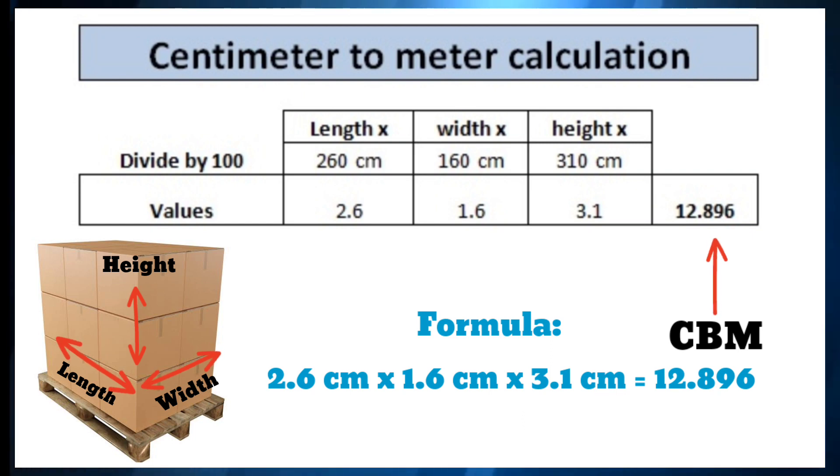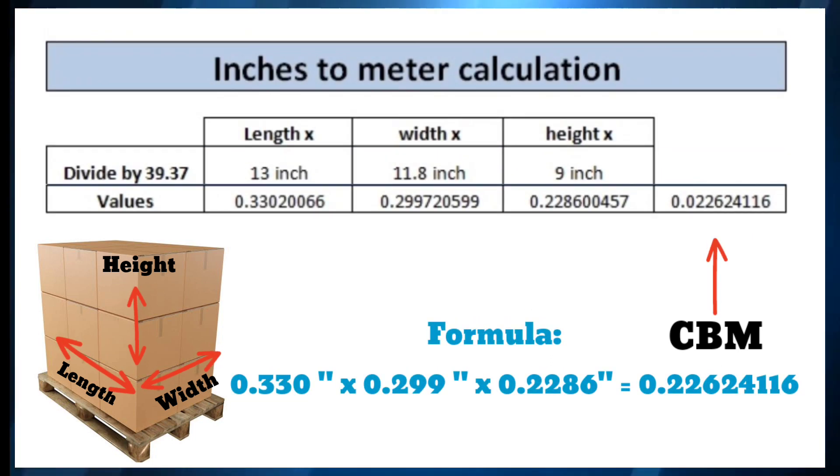If measurement is performed in inches, we have to divide each value by 39.37. Suppose cargo boxes' length is 13 inches, width is 11.8 inches, and height is 9 inches. After dividing each value by 39.37 and multiplying the values according to the formula, we get CBM.